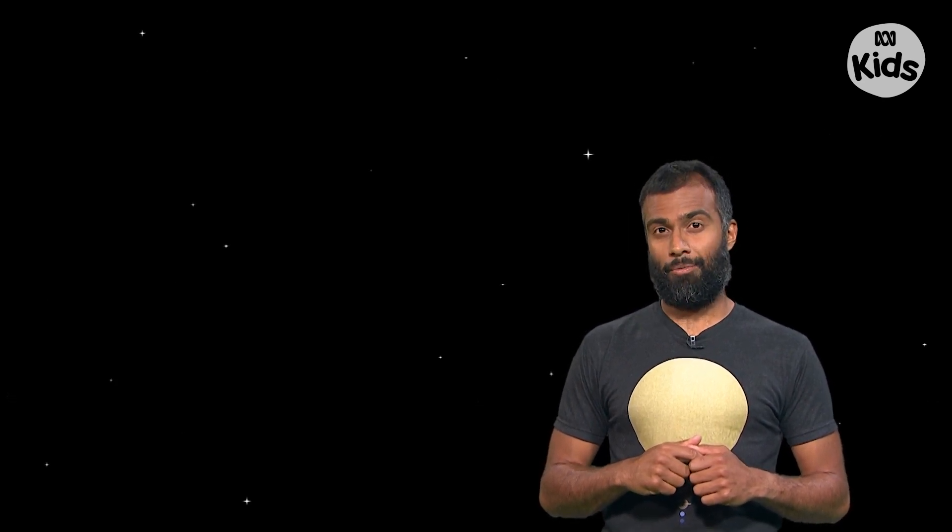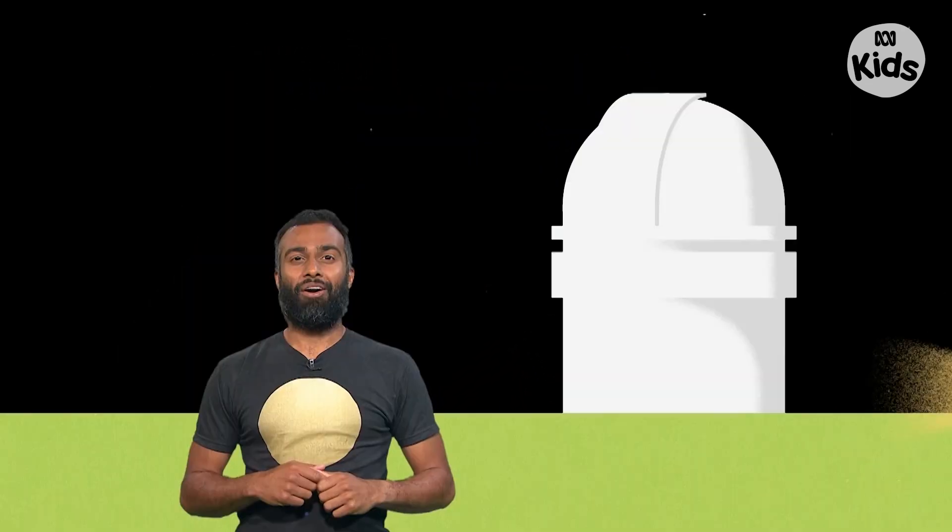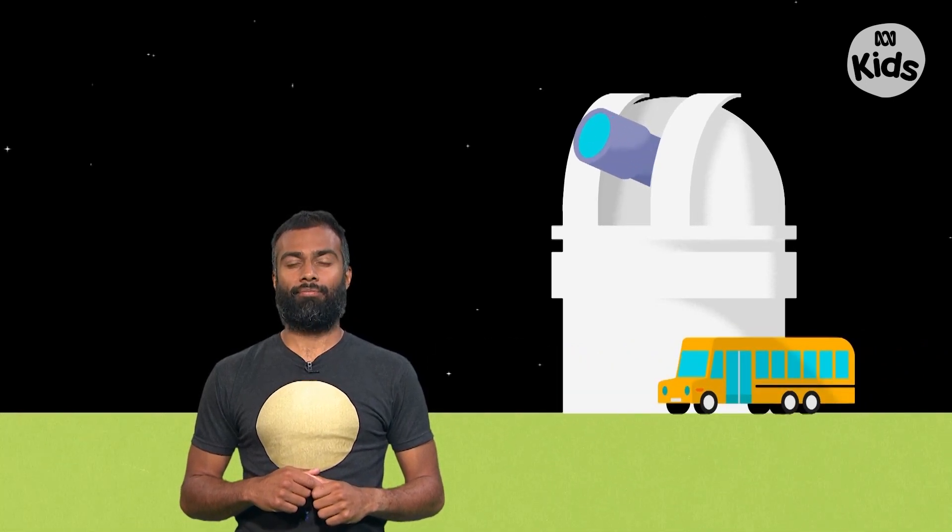Astronomers look up at the sky with a special instrument called a telescope. They can be small, like this one, or as big as a bus, like the ones used in observatories. They make things that are really far away, like stars, look really close up.